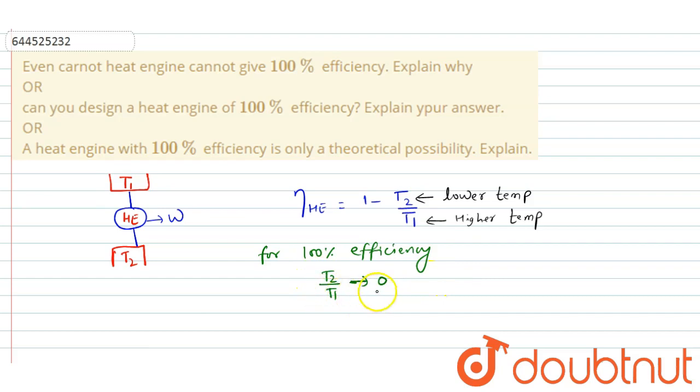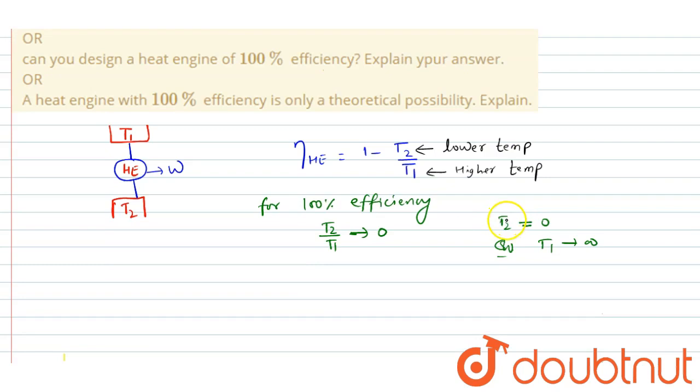For T2 by T1 to tend to 0, T2 tends to 0 or T1 tends to infinity. But we know that it is impossible to obtain absolute 0 temperature, means T2 cannot be achieved at 0 Kelvin.